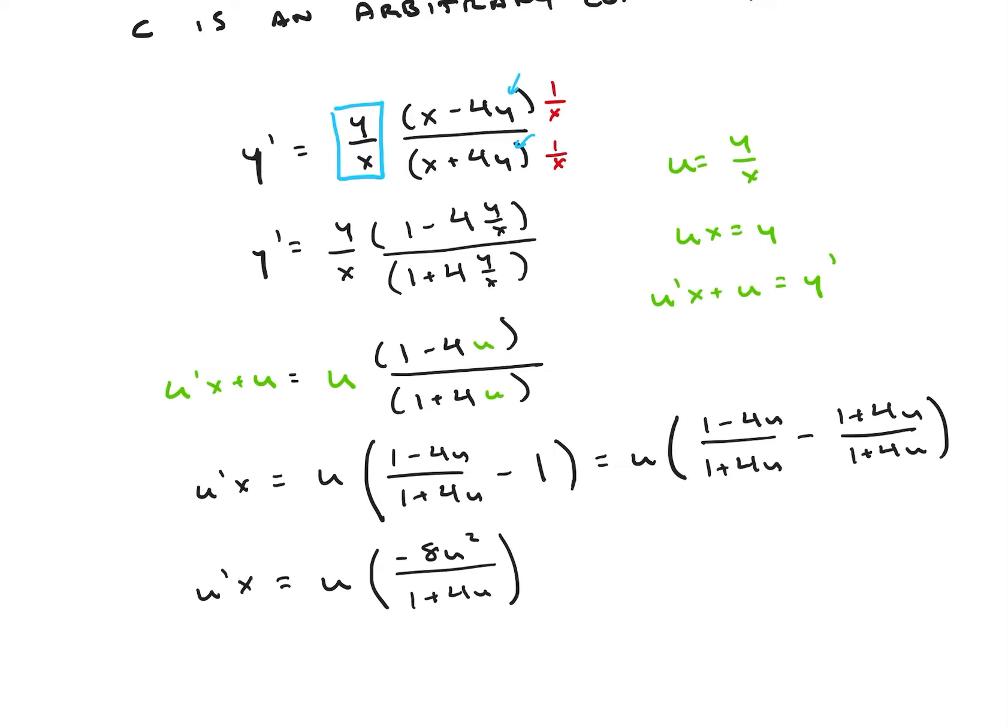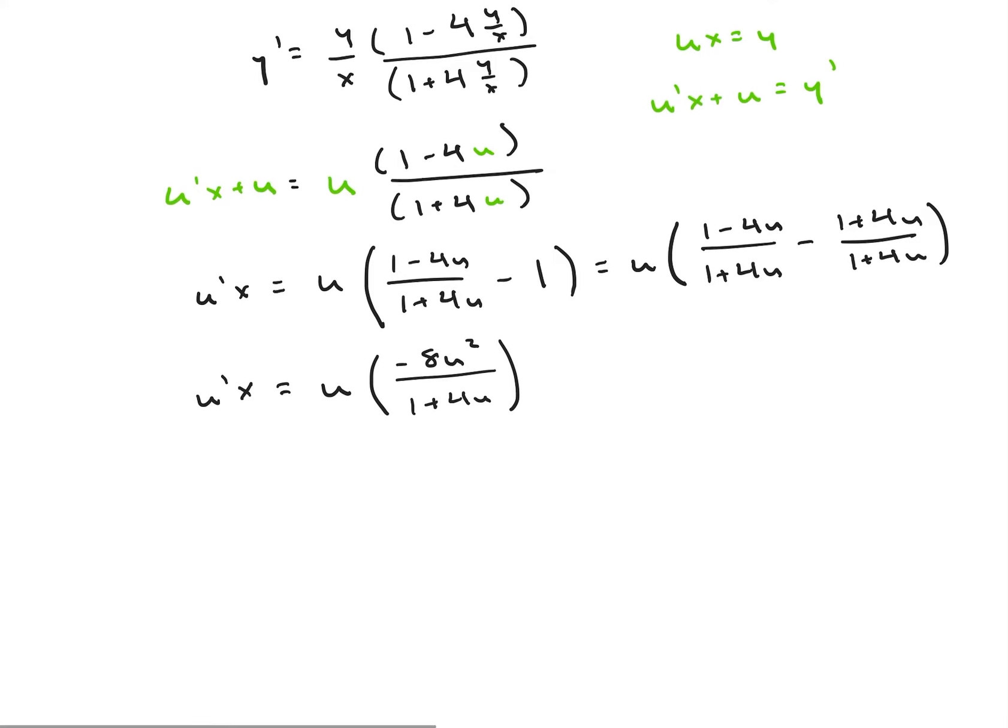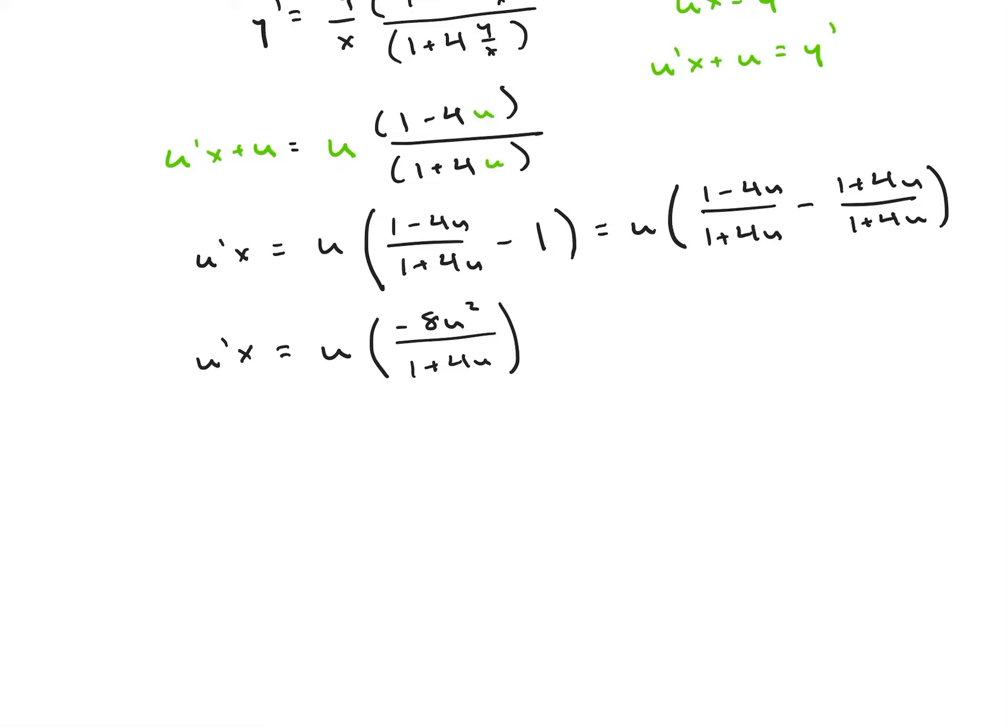All right, so I should be liking this. I can see that I'm at a state where I can use separation of variables here. So if I put everything with a u on the left, I'm going to get du times 1 plus 4u, 1 over negative 8u squared is equal to 1 over x dx. I'm going to integrate both sides of that expression.